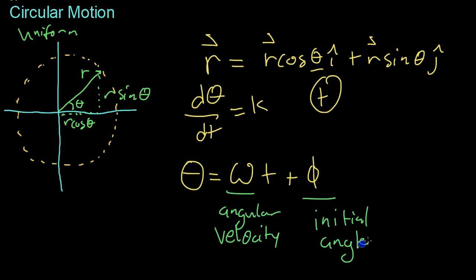So you can see that if phi were to be zero, then you'd start here and move around at that speed, omega, every t seconds.